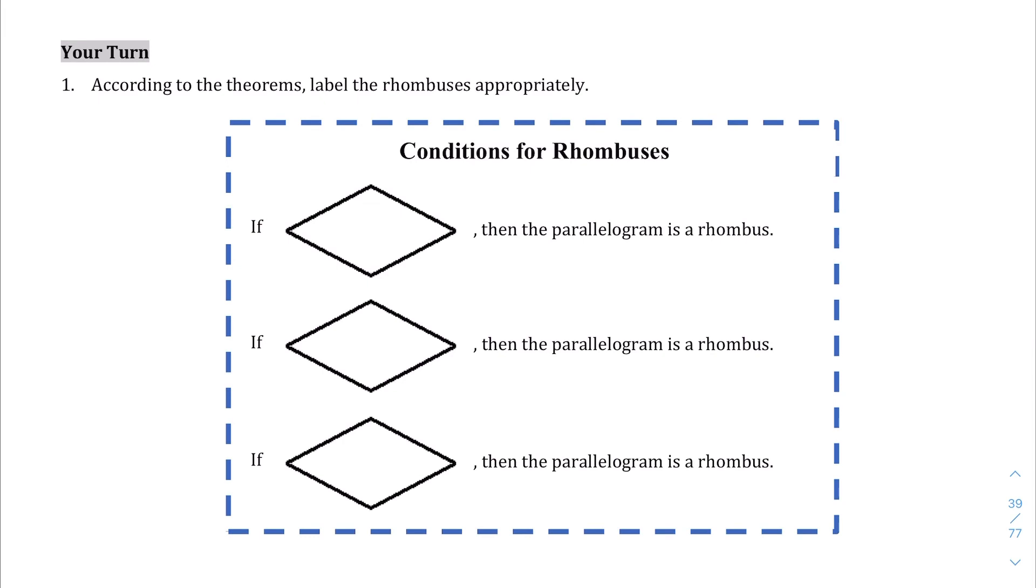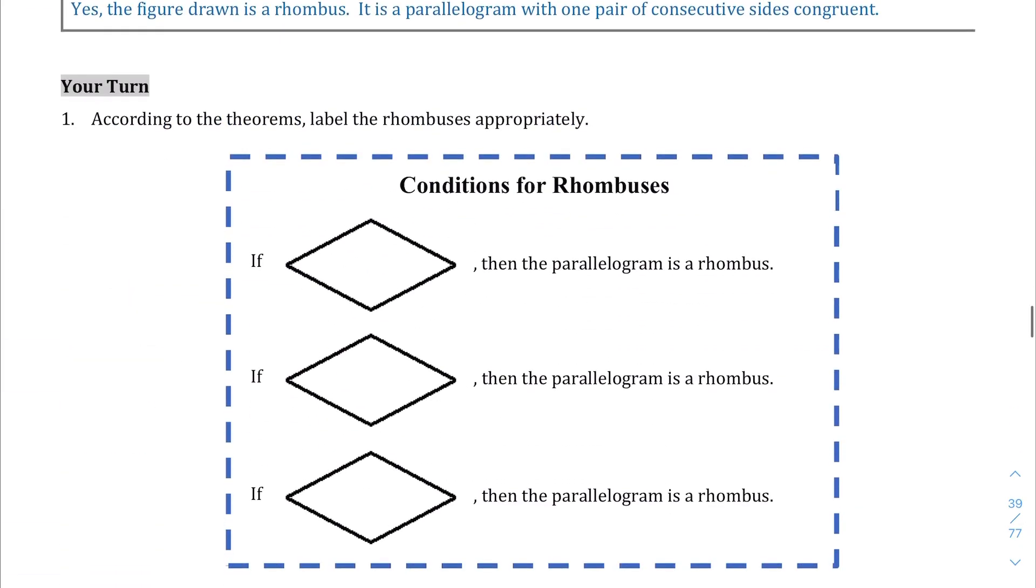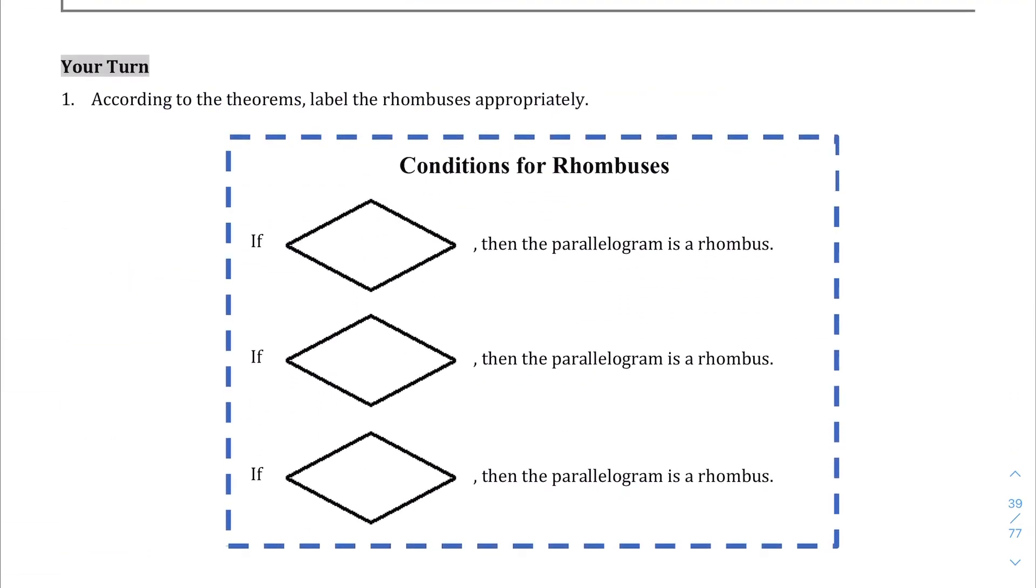So let's try to recall what's going on here. The first one was that if two consecutive sides, first of all if you have a parallelogram and two consecutive sides right next to each other are equal, then you have a rhombus.